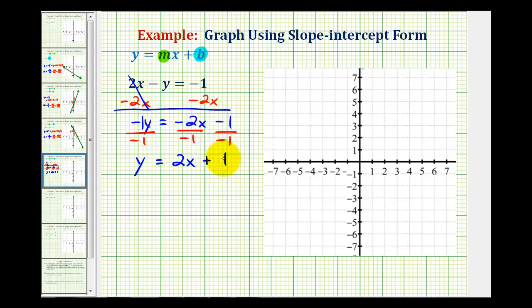So now we can see that b is equal to positive 1, and m is equal to positive 2. So if b is equal to positive 1, that tells us that the y-intercept would be the point 0, 1. And if m is equal to positive 2, which is the slope, we'll write the slope as 2 over 1, which tells us the change in y with respect to the change of x, sometimes expressed as the rise over the run.